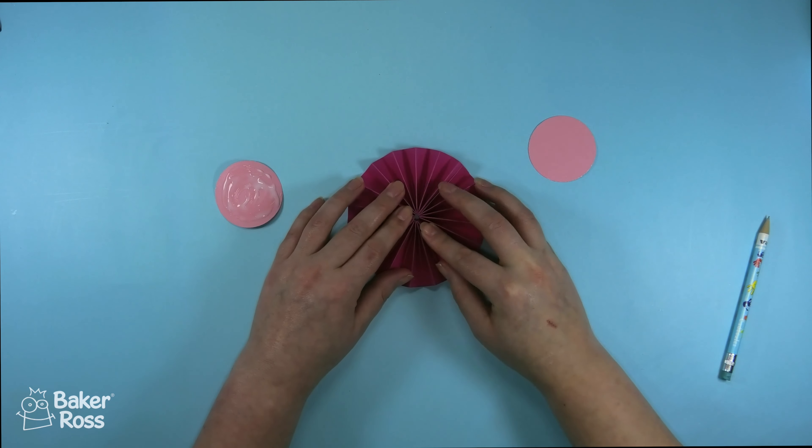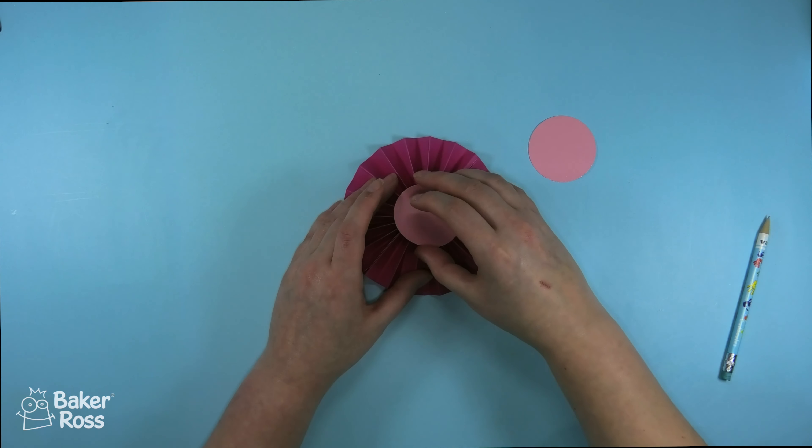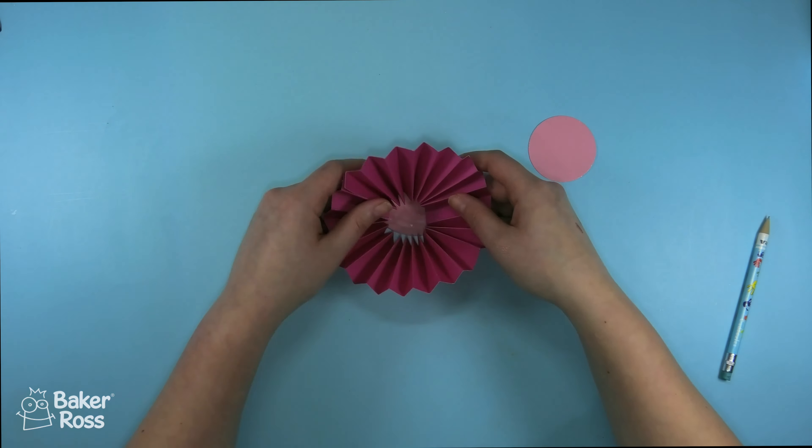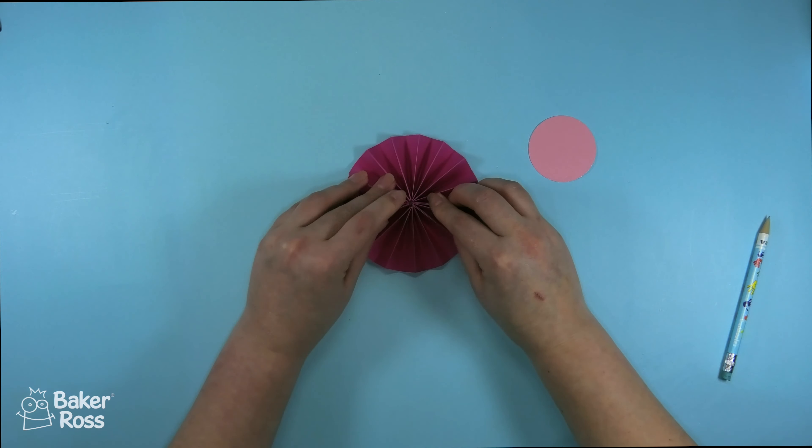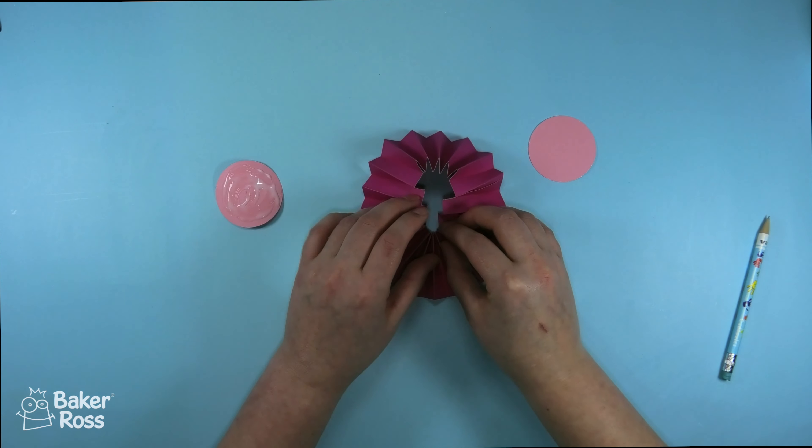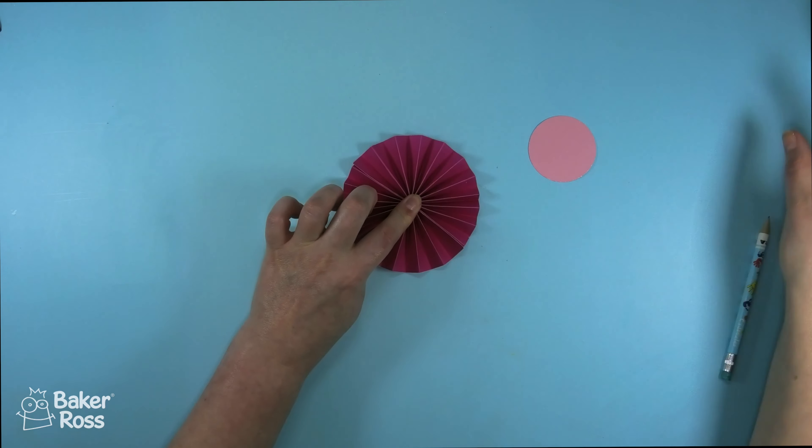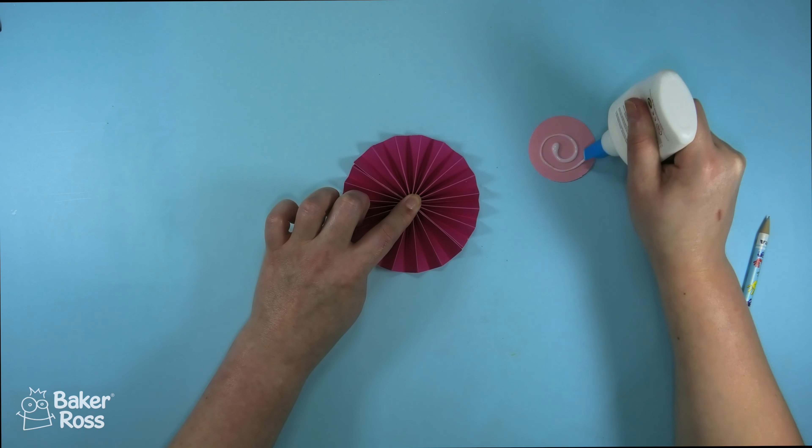You just want to push one of those edges in towards the middle and it will change that concertina paper into a rosette shape. I'll go ahead and show you that again because it's a little tricky to get your head around at first but once you have it figured out you'll be making rosettes in no time.